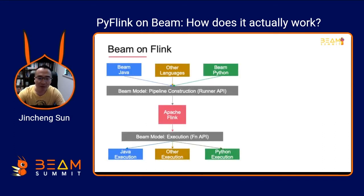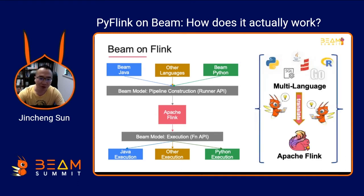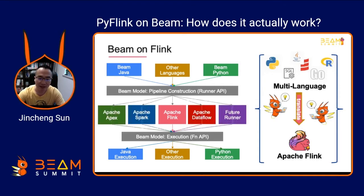So Beam on Flink means that users can use the Beam API to write Flink jobs. Beam will help users translate the calculation logic described by Beam API into Flink's job topology. Of course, the integration of other computing engines in Beam is similar to Beam on Flink.